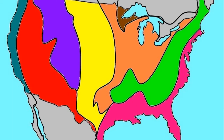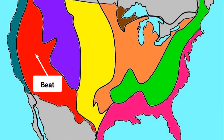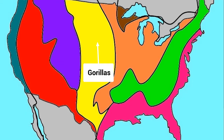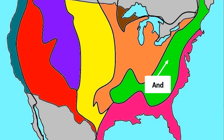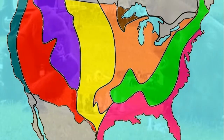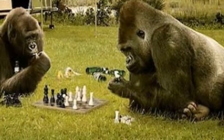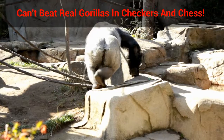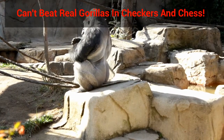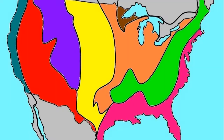Buckle up. The sentence we'll use to learn the location of the eight geographic regions is: Can't. Beat. Real. Gorillas. In. Checkers. And. Chess. Can't beat real gorillas in checkers and chess! How does a crazy sentence like that help you remember where the U.S. geographic regions are located? Well, when you come to this crazy looking map, just put the first letter of each region in each shape, going from left to right.